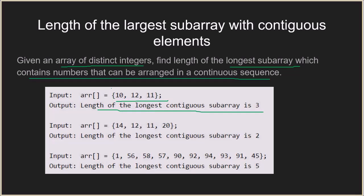The length of the longest contiguous subarray is 3, because all three elements — 10, 11, and 12 — are contiguous. In another example with the array 14, 12, 11, and 20, the length of the longest contiguous subarray is 2, for the elements 11 and 12. In a larger array example, the length is 5, because the elements 90, 91, 92, 93, and 94 are contiguous.